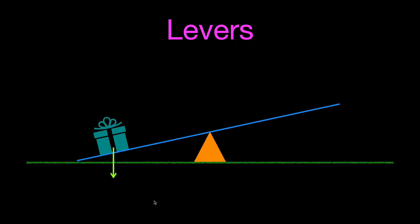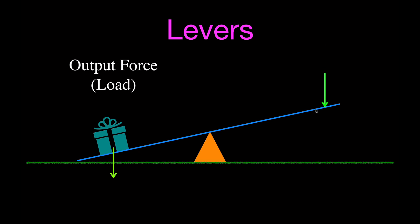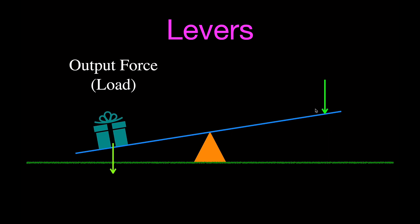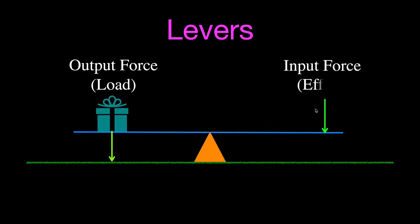This is levers — a quick introduction. When we think about levers, we think about this teeter-totter or seesaw setup, where we have a force on one side that we can call the output force or the load. We want to lift that object by applying a force on the other side, which we call the input force or the effort. Those are two important things to know: output force and input force, load and effort.